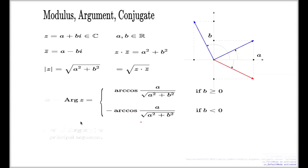If you define the argument with this particular formula, that's the formal standard definition, your argument will always be within these ranges. We have a special name for this way chosen argument: we call it the principal argument.